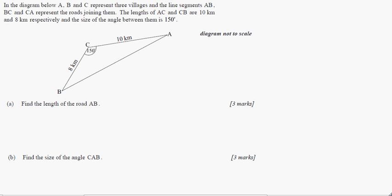It says in the diagram below, A, B, and C represent three villages and the line segments AB, BC, and CA represent roads joining them. The lengths of AC and CB are 10 kilometers and 8 kilometers respectively, and the size of the angle between them is 150 degrees. Now, the important thing to notice here is that the diagram is not to scale. So you can't just measure it and try and guess what it is.